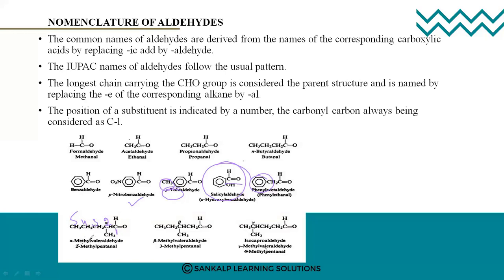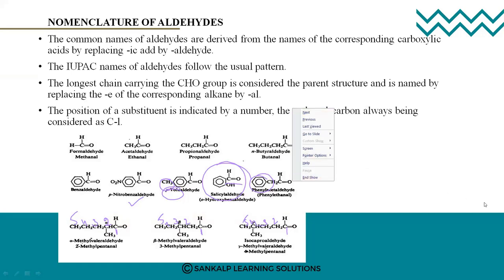For branched aliphatic aldehydes with five carbons — pentanal — E is replaced by AL. For example, 2-methylpentanal. Numbering from the CHO end: 1, 2, 3, 4, 5 gives 3-methylpentanal, and another arrangement gives 4-methylpentanal. These are the ways you can name aldehyde compounds. Nomenclature is very important as questions are asked based on it.